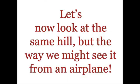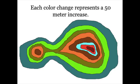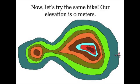So now we're going to take a look at the same hill, but the way we might see it from a drone or an airplane. If you look at each color change, it's represented by 50 meter increases. So if you look at the little man, he's at zero meters right now.